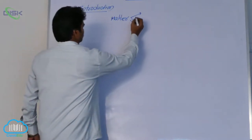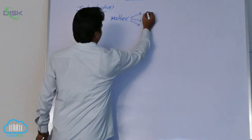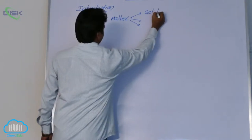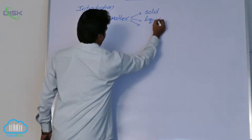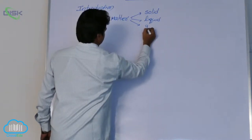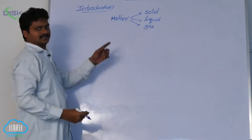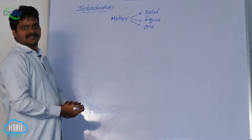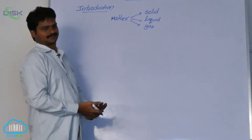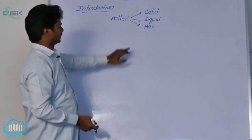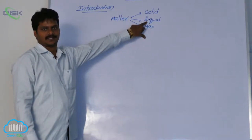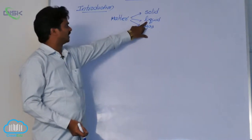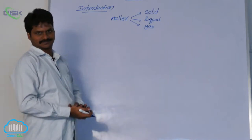The three states of matter are solid, liquid, and gaseous state. These are the three main states of matter possible. In first year, we discussed about gaseous state and liquid state. Now we will discuss about solid state.